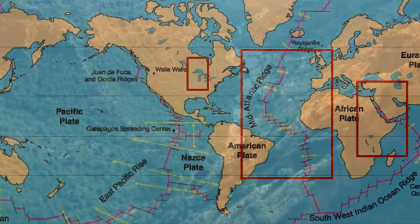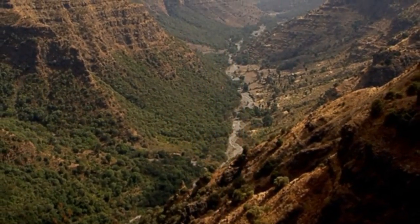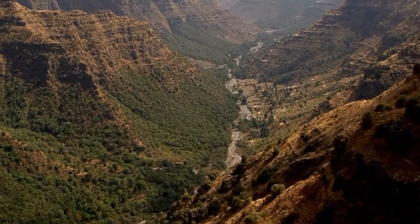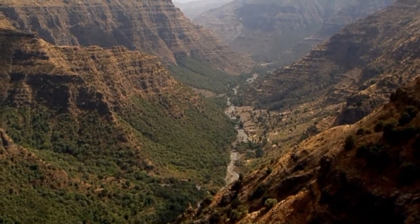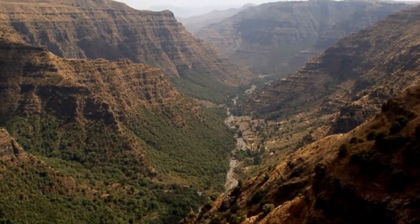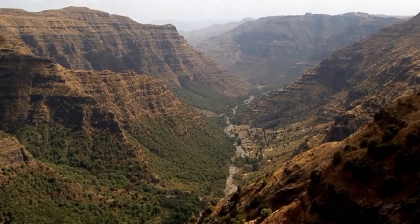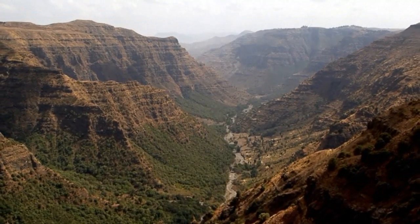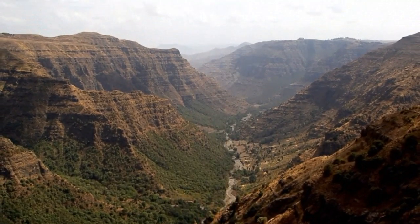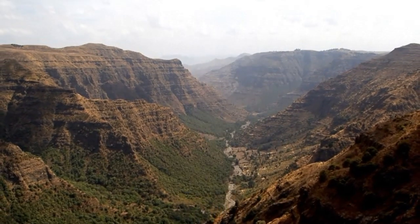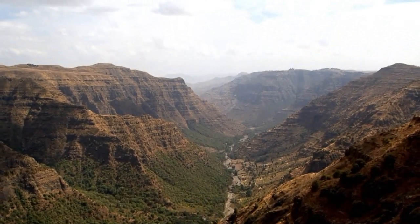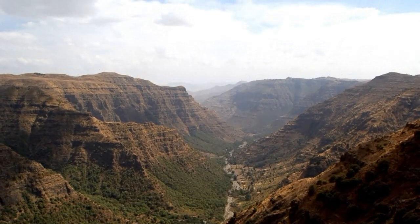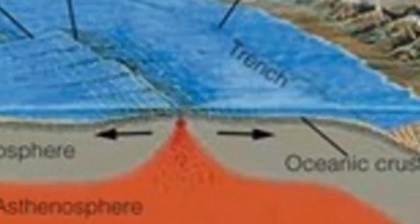The development of a new ocean basin begins with the formation of a continental rift, an elongated depression in which the entire thickness of the lithosphere has been deformed. Examples of continental rifts include the East African rift, the Baikal rift in south-central Siberia, the Rhine Valley in northwestern Europe, the Rio Grande rift, and the basin and range province in the western United States. Continental rifts form in a variety of tectonic settings and may result in the breakup of a landmass.